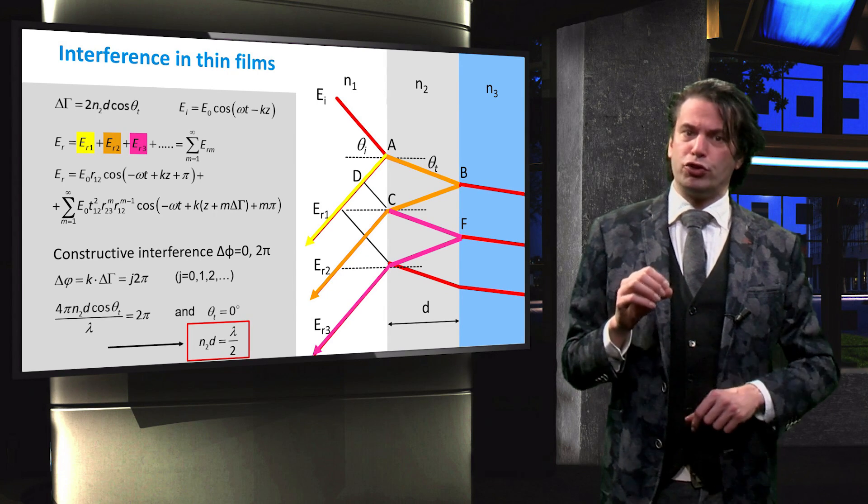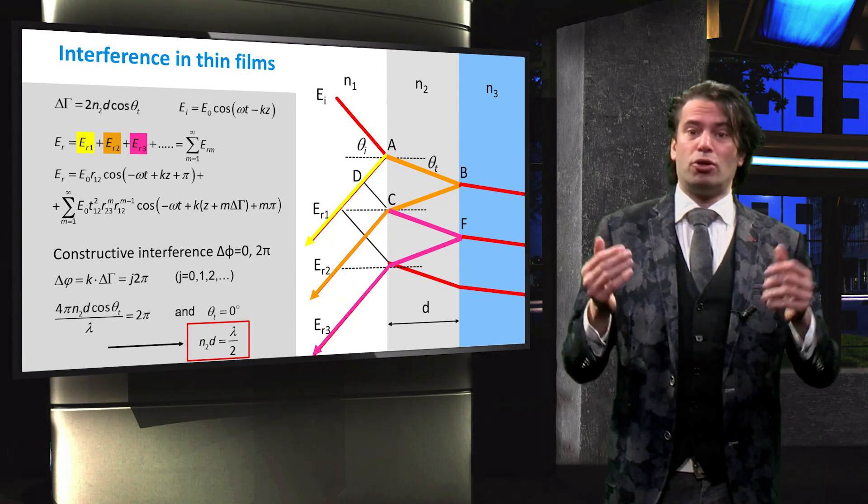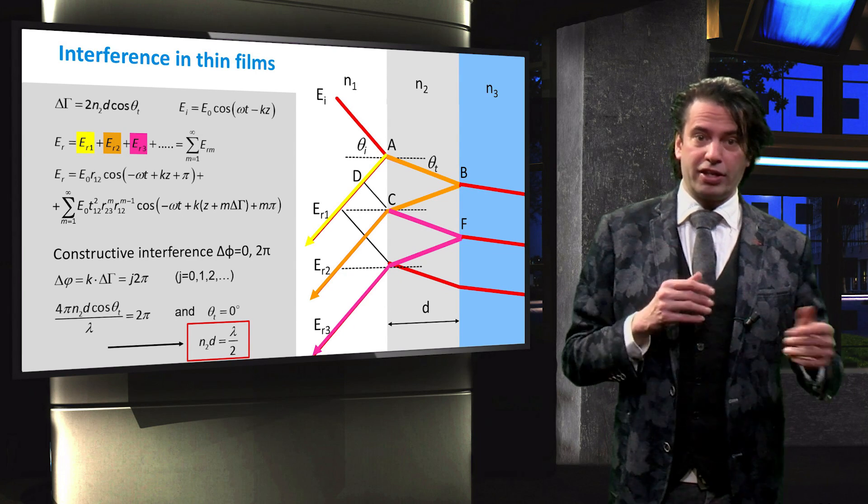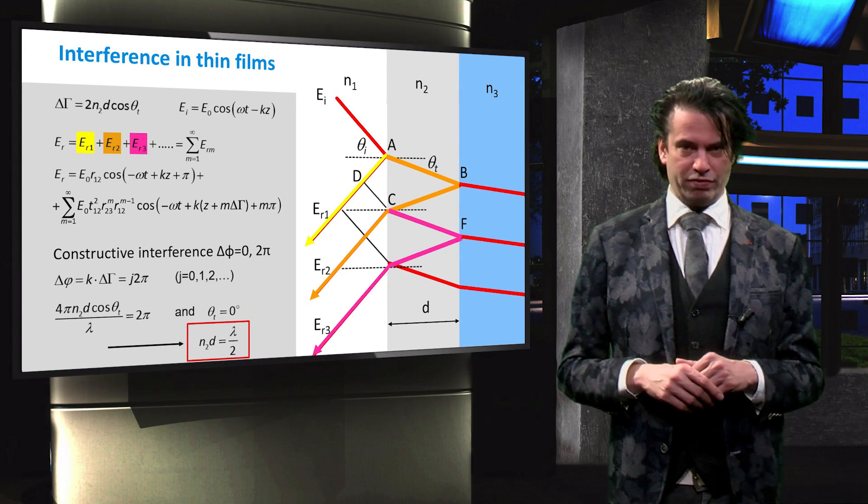From this relation it follows that for waves of a certain wavelength to constructively interfere, at normal incidence the product of the thickness and refractive index of the layer have to match half the intended wavelength.